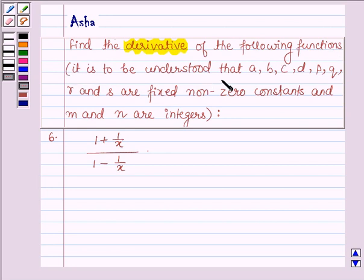It is to be understood that A, B, C, D, P, Q, R and S are fixed non-zero constants and M and N are integers.